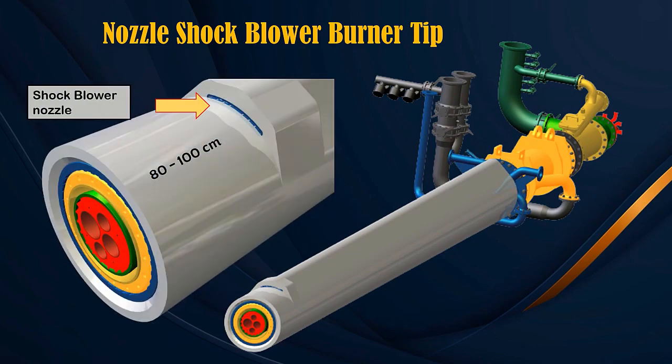Method two: using a shock blower nozzle mounted on the burner body. The position of the shock blower nozzle is 80 to 100 cm from the burner tip, and the shock blower shot cycle is a minimum of once every 1 hour.